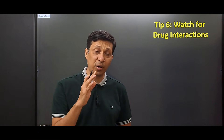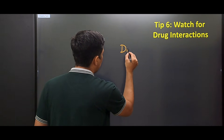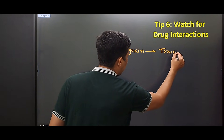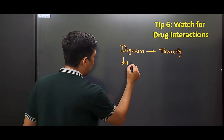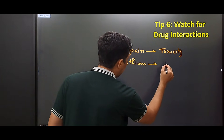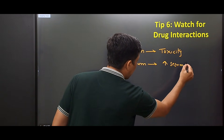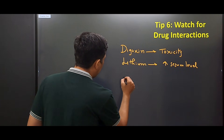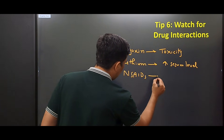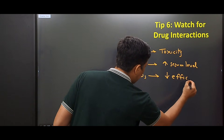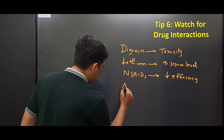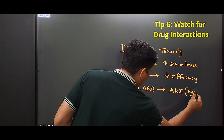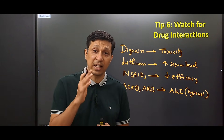The sixth important tip is to watch for drug interactions. There are four important ones. First, with digoxin: hypokalemia caused by furosemide can lead to digoxin toxicity. Second, with lithium: serum levels of lithium can increase. Third, with NSAIDs: they decrease the efficacy of furosemide. Fourth, with ACE inhibitors: they can cause acute kidney injury if the patient is hypovolemic.